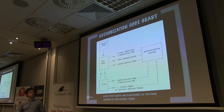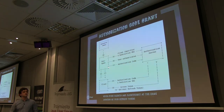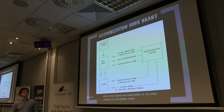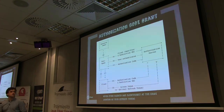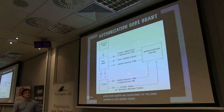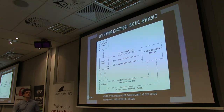The authorization server then redirects the user back to the client, including in the redirect URL an authorization code — a one-time-use code to obtain the access token. The client sends that code to the authorization server in a server-to-server communication, and the authorization server sends back an access token and optionally a refresh token.